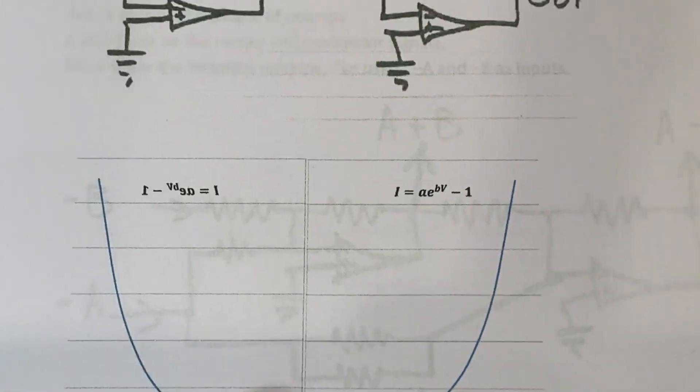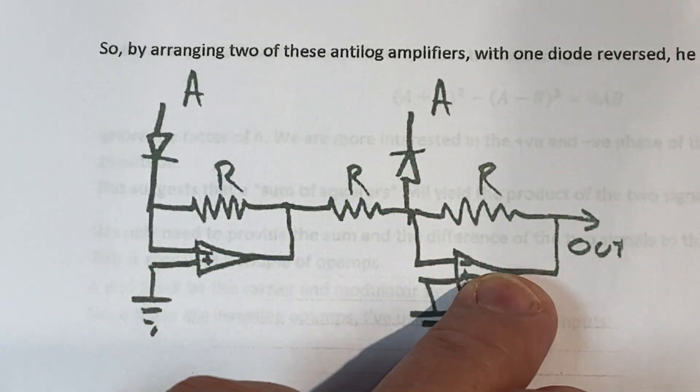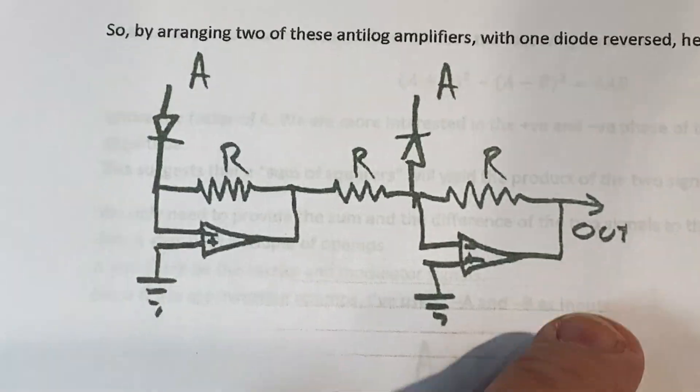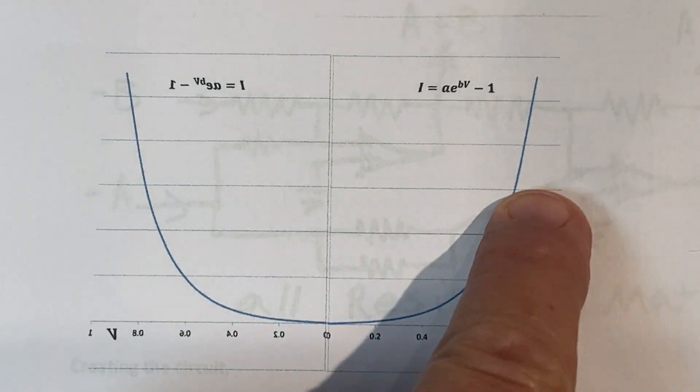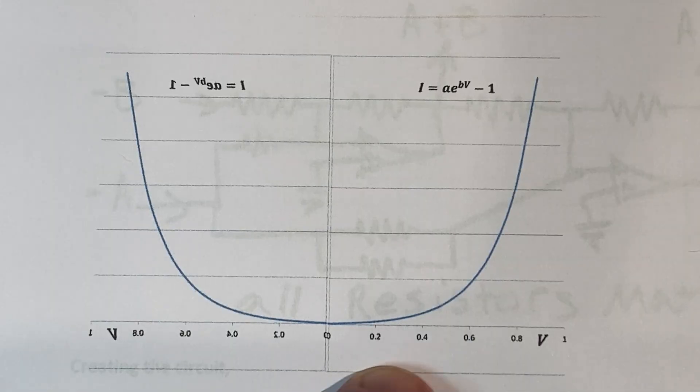For the negative input voltage, I still do my anti-log function, but negative, it's inverted, and I get a positive result. So since these curves are exponential going both ways, this actually forms what's called a hyperbola.